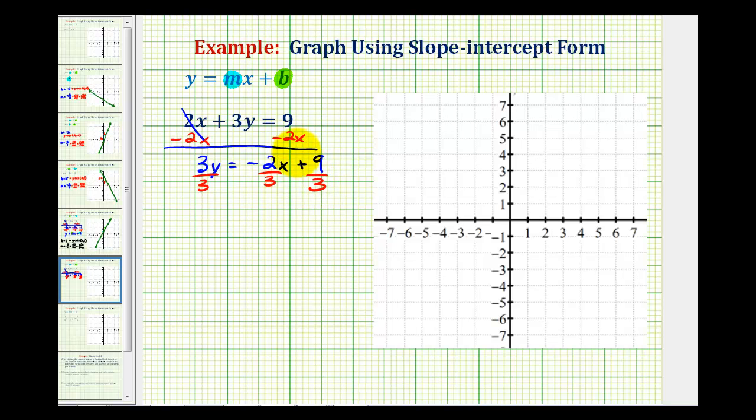So in slope intercept form, the equation would be y equals negative 2/3rds x and then plus 3.